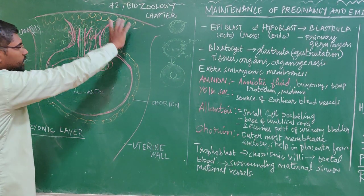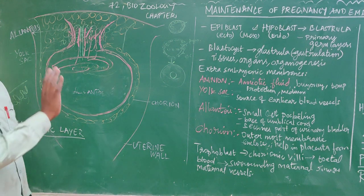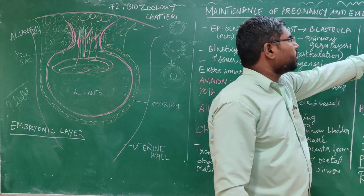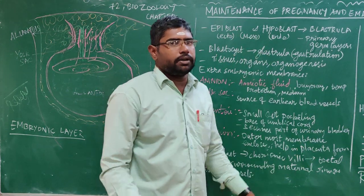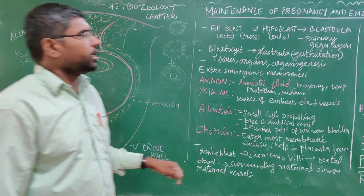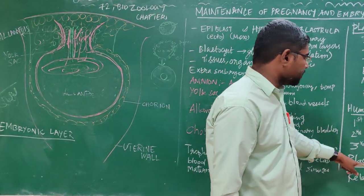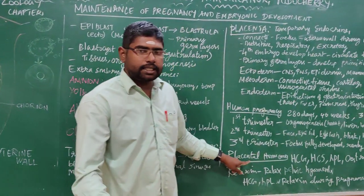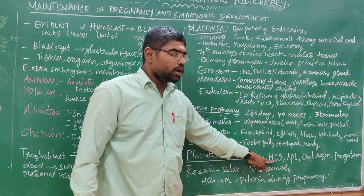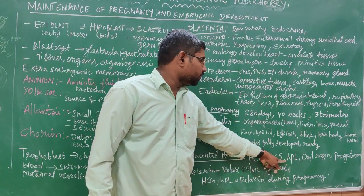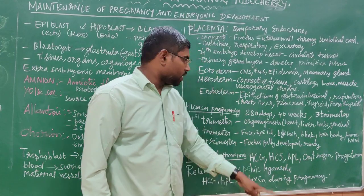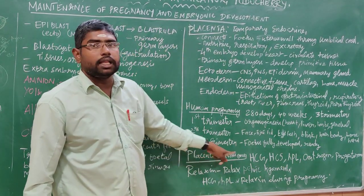What is the placenta? The placenta is a temporary endocrine organ. It produces placental hormones: human chorionic gonadotropin (hCG), human chorionic somatomammotropin, human placental lactogen, and estrogen and progesterone. These are the hormones secreted by the placenta.